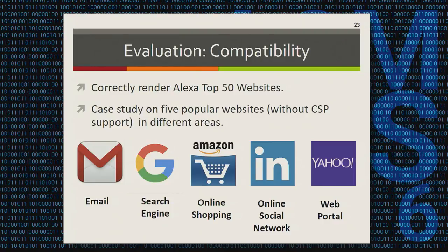We also measured the compatibility of CSP Autogen. We ran CSP Autogen on Alexa's top 50 websites and used an image diff algorithm to verify that all 50 websites are correctly rendered. We also manually performed extensive case studies on five popular websites in five different categories. With CSP Autogen enabled, we sent and received email, purchased books, and shared and commented on news. The results show that CSP Autogen can preserve the functionalities of email, online search, online shopping, online social networks, and web portals.